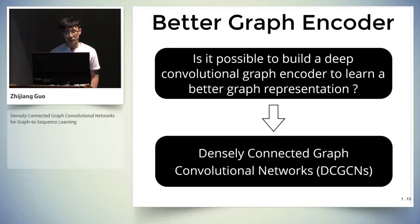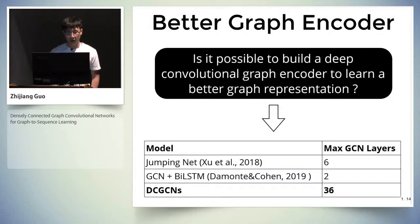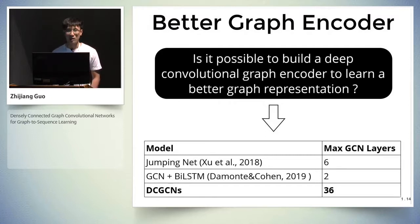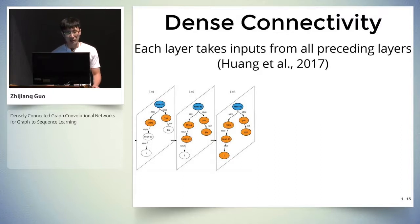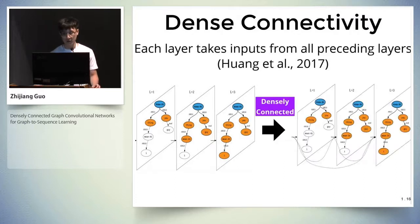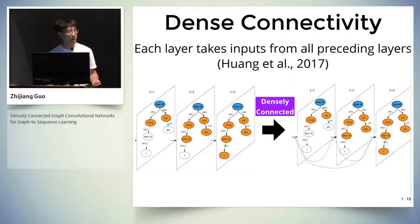To answer this question, we propose the Densely Connected Graph Convolutional Networks, DC-GCN in short. Our proposed model is able to have many more graph convolutional layers, which enables the model to capture long-range information on relatively large graphs. The core component of our proposed model is the dense connectivity. In vanilla GCNs, each layer only takes input from the previous layer, while in our proposed model, each layer takes input from all preceding layers. This dense connectivity is inspired by DenseNet. We define these as densely connected graph convolutional layers.